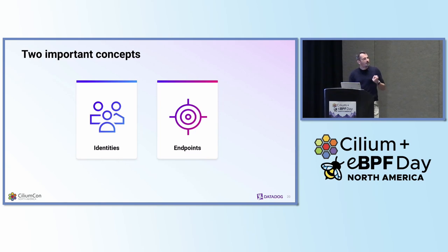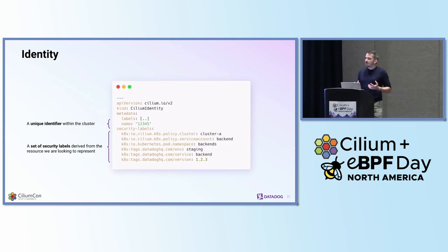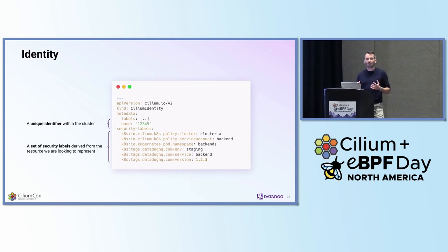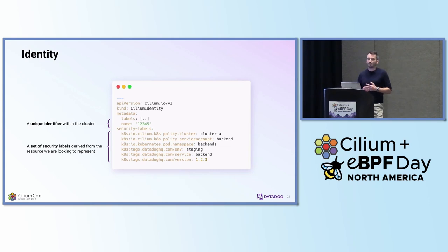When we use network policies with Cilium, there are two very important concepts essential to understand how those policies are being enforced: identities and endpoints. An identity in Cilium is basically a unique identifier assigned within the cluster, derived from a set of labels. In short, they allow us to represent a set of pods which are fairly similar — they can be part of the same deployment or replica set, for instance. As pods may come and go quite easily, so will their associated IP addresses, and having such abstractions makes it much easier to scale out the enforcement of our policies.